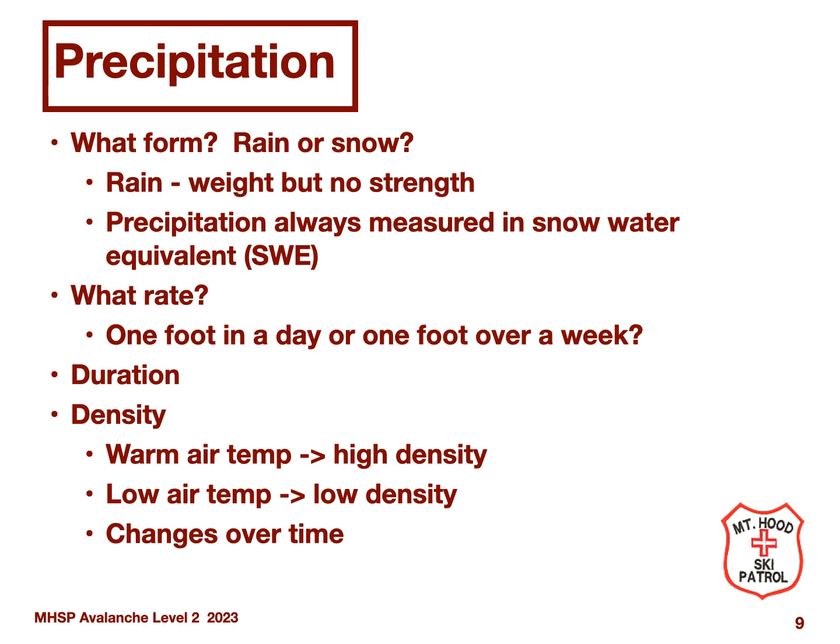For precipitation, the first question is what form is it — rain or snow? Rain adds more weight without adding strength; it also weakens the bond between grains in the snowpack, so rain is bad for snowpack stability. When we talk about precipitation, we talk in terms of snow water equivalent, or SWE. A second key parameter is rate: how fast is the snow coming down? One foot of new snow in a day has a very different effect on the snowpack than one foot of new snow in a week. Rapid loading will add much more stress on the snowpack than the same loading spread over a longer time.